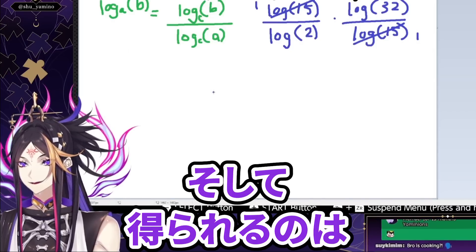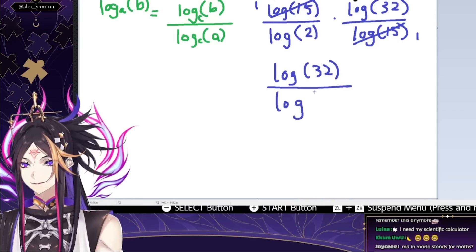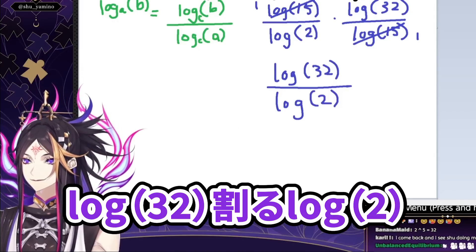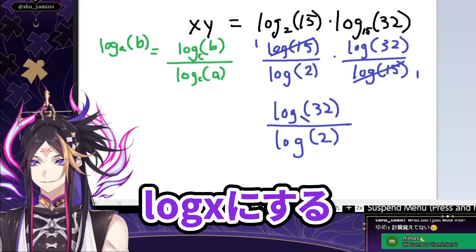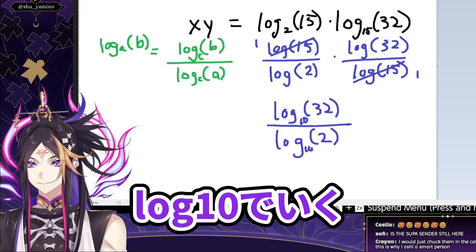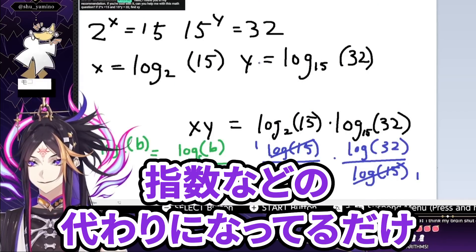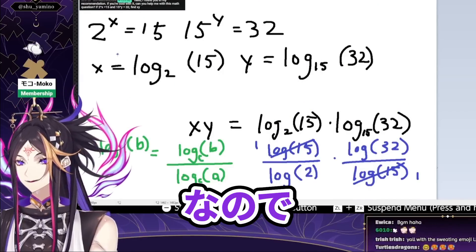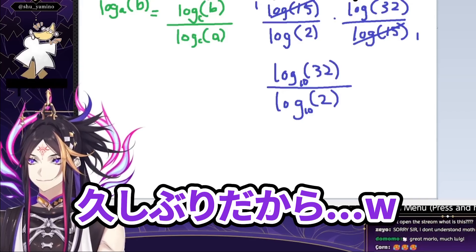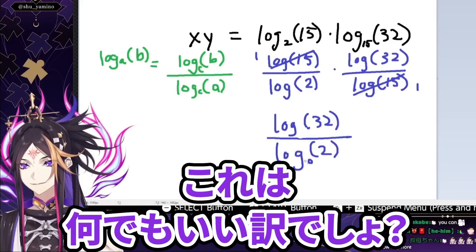So then I get log 32 over log 2. And then I do logarithmic division — log 32 divided by log 2. I'll do base 10. So log is just a substitution for the exponents and stuff. Because this could be anything, right? Just use log base 2 — not base 10, that'll be easier.